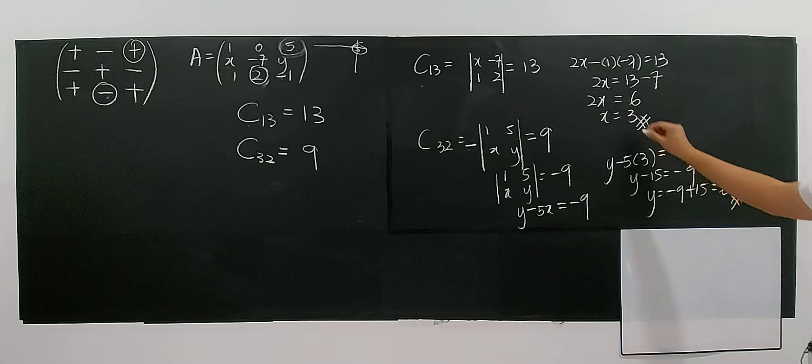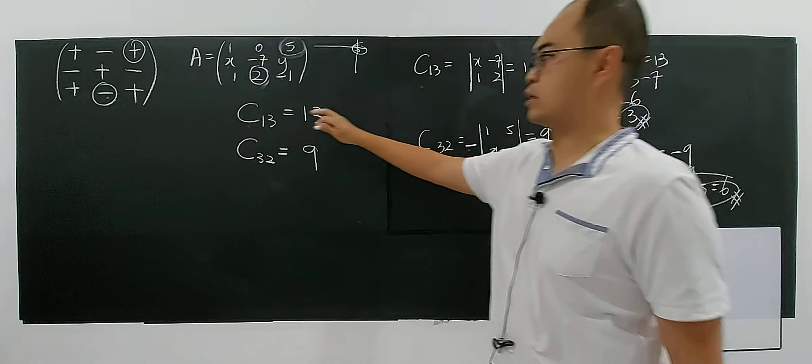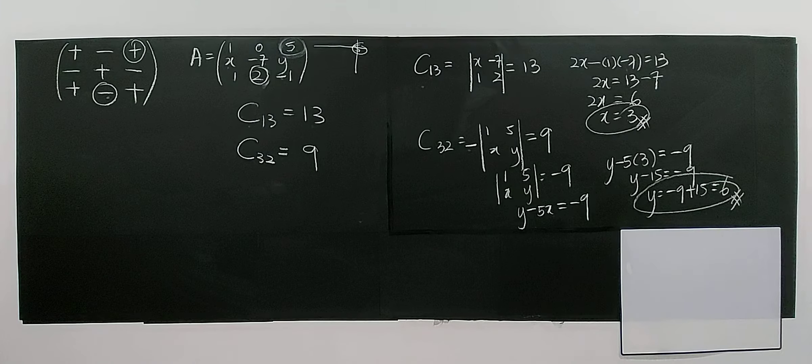So, therefore, your value of x is 3 and your y is 6. The most important thing is you understand what is the difference between cofactor and minor. Okay. That's all for this example.